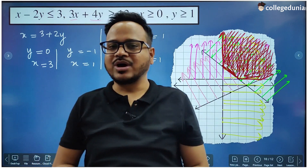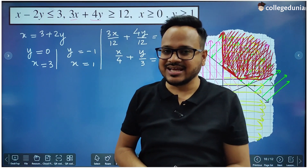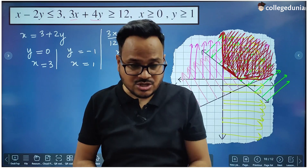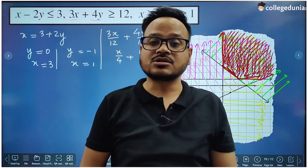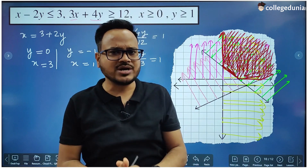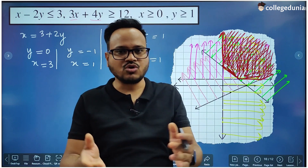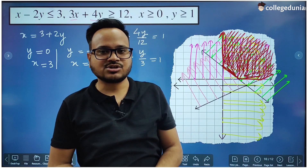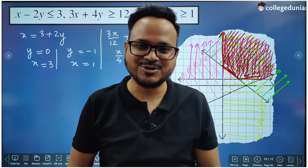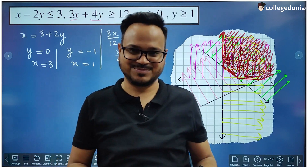This is how you can find graphically the solution to a single linear inequality or the solution region to a set of linear inequalities. Based on this, you can solve exercises 6.2 and 6.3 of the NCERT textbook. Go and solve those yourself — I will meet you in the next lecture.